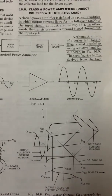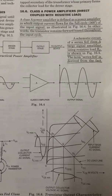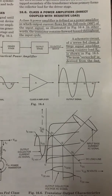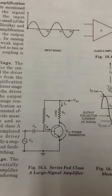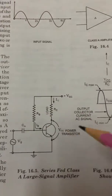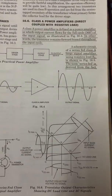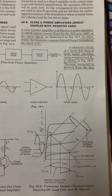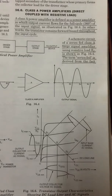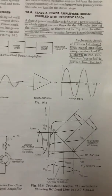Hello students. Today I will discuss the Class A power amplifiers. It can be done by two methods: first method is direct coupled with load resistance, and second method is transformer coupled. In today's lecture I will be covering the first method only, that is direct coupled with load resistance. Here RC is used as a load resistance. Class A power amplifier is defined as a power amplifier in which output current flows for the full cycle of the input signal. The transistor remains forward biased throughout the input signal. A schematic circuit using resistive load RC is shown.